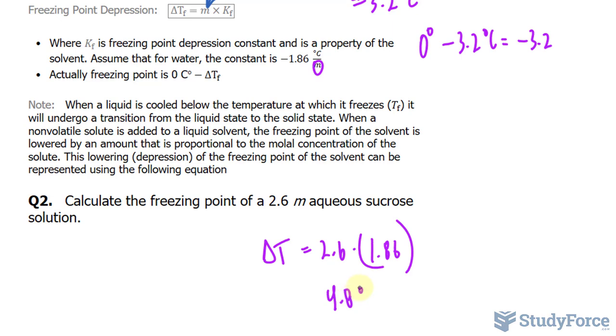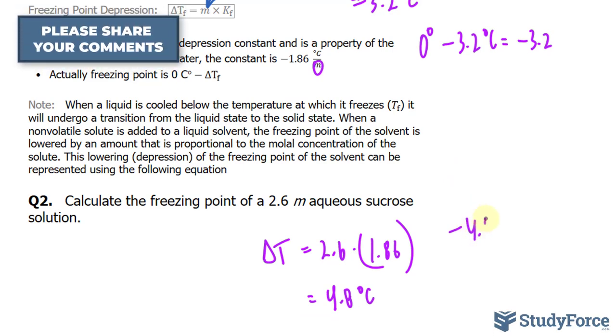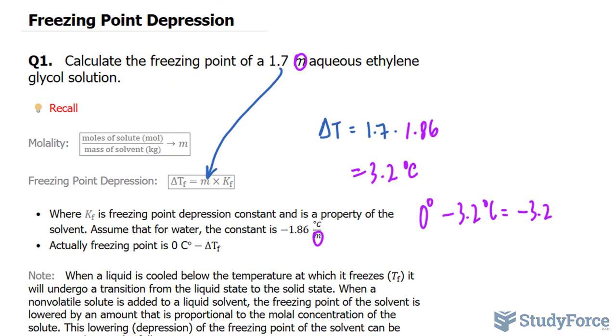4.8 degrees Celsius. And if I subtract this now from zero, the new freezing point is negative 4.8 degrees Celsius. And there you have it. That is how to calculate the freezing point of a solution.